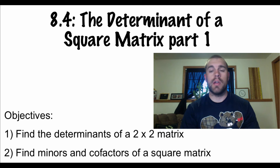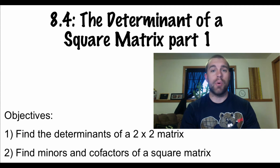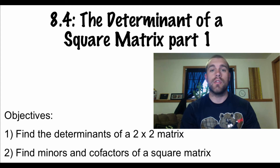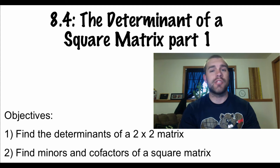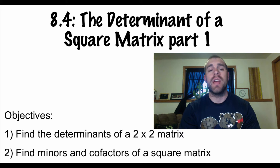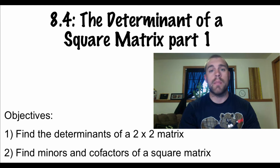Hey guys, Mr. Bakkerberg here. This is the first part of lesson 8.4. We've got two objectives for this video: we're going to find the determinant of a 2x2 matrix, and we're going to find minors and cofactors of a square matrix.